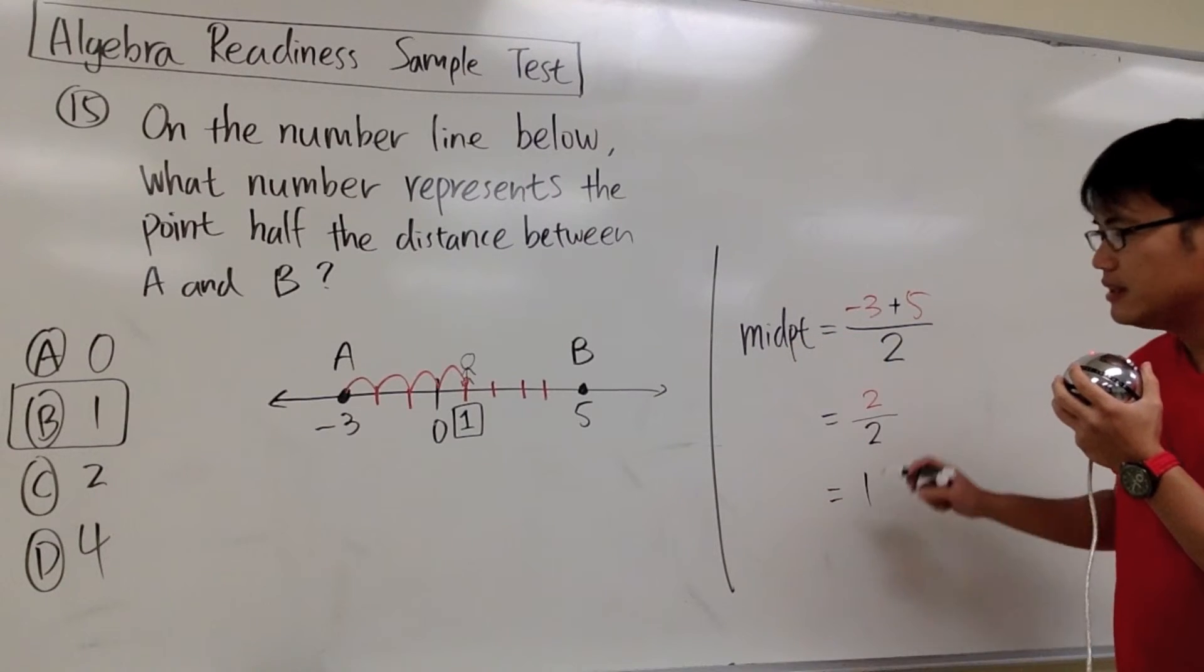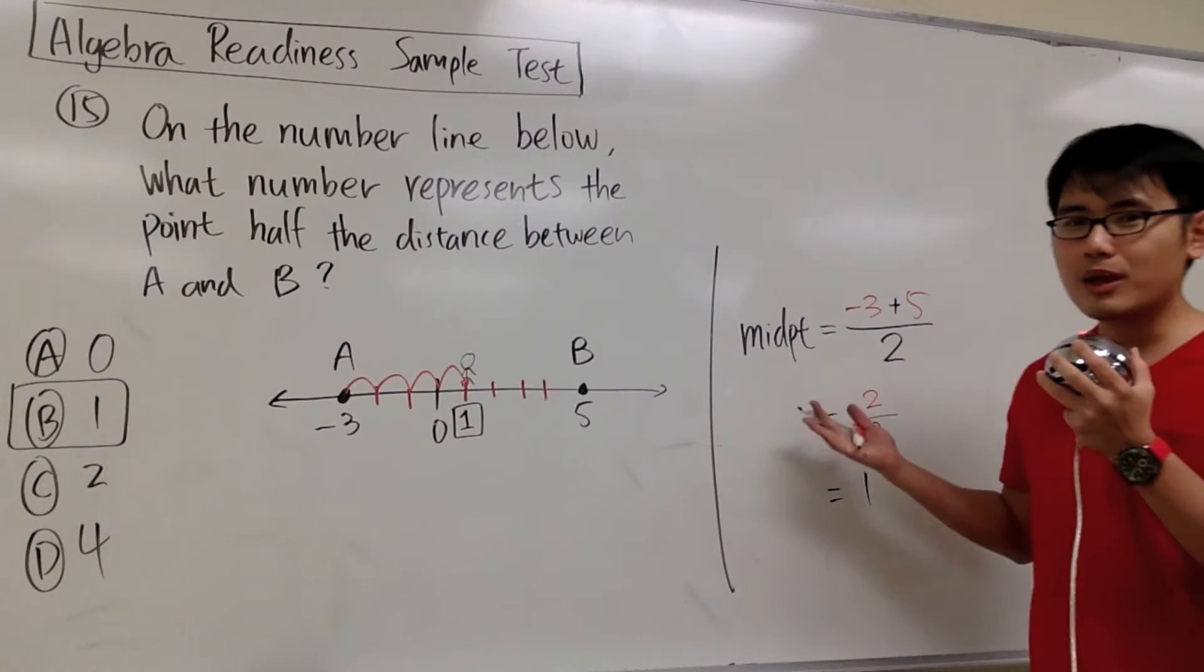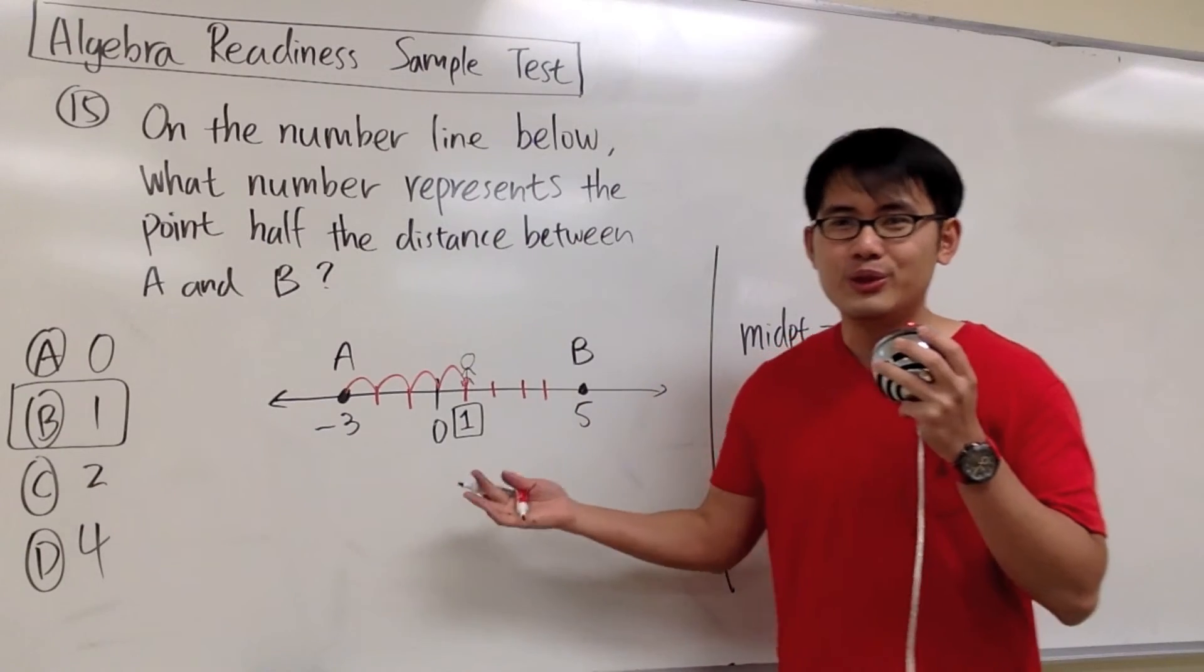So you see, the middle point is at 1. This is the formula way, and this is the more official way. Which way do you guys like better?